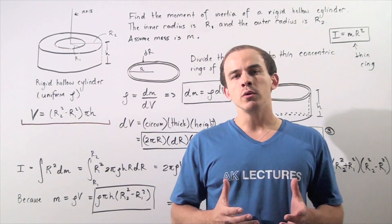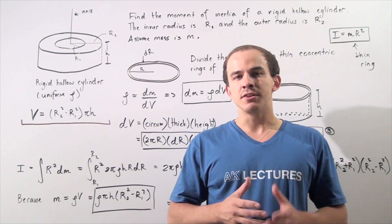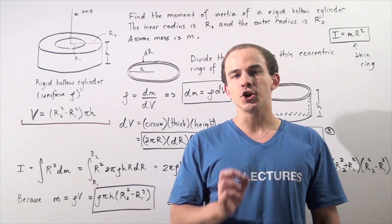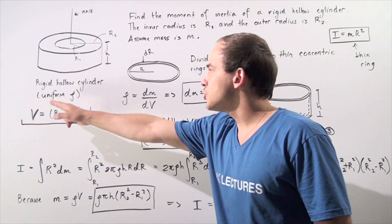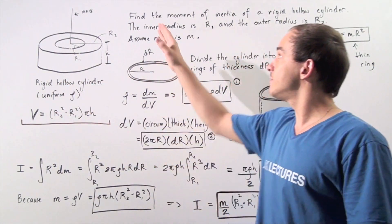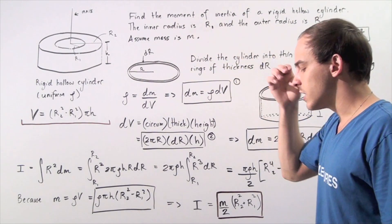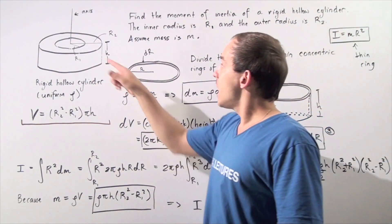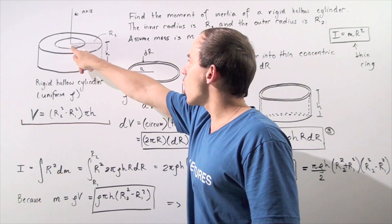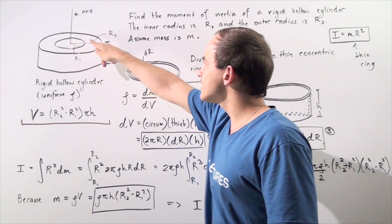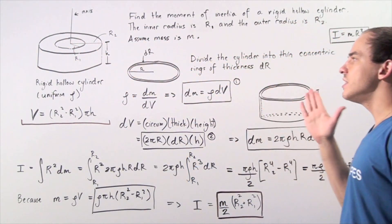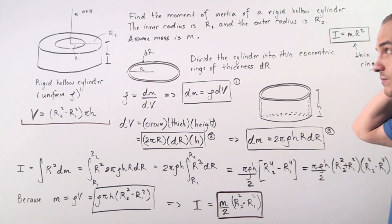In this example, our goal is to find an equation for the moment of inertia of a rigid hollow cylinder. We want to find the moment of inertia knowing that the inner radius is R1, the outer radius is R2, the height is H, and the mass of our object is M.